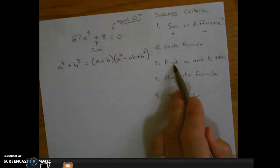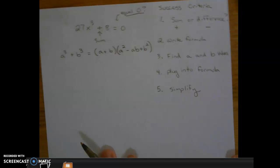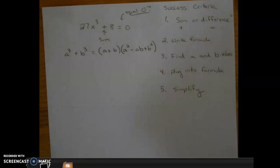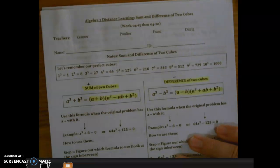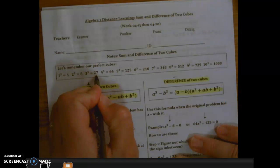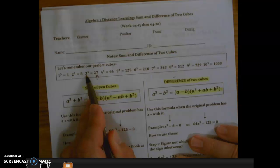Success criteria number three, find a and b values. So here's where we need to change 27 to the cube root of 27. Looking at your yellow strip, we have listed the perfect cubes. We're looking for 27. The number that gives us 27 is 3. 3 × 3 × 3 is 27.